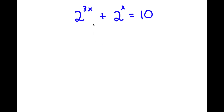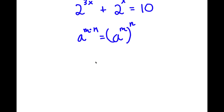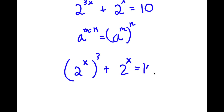In this problem, I have 2 to the power of 3x plus 2 to the power of x is equal to 10. If I have something in the form a to the power of m times n, this is equal to a to the power of m to the power of n. So 2 to the power of 3x equals 2 to the power of x to the power of 3, plus 2 to the power of x is equal to 10.